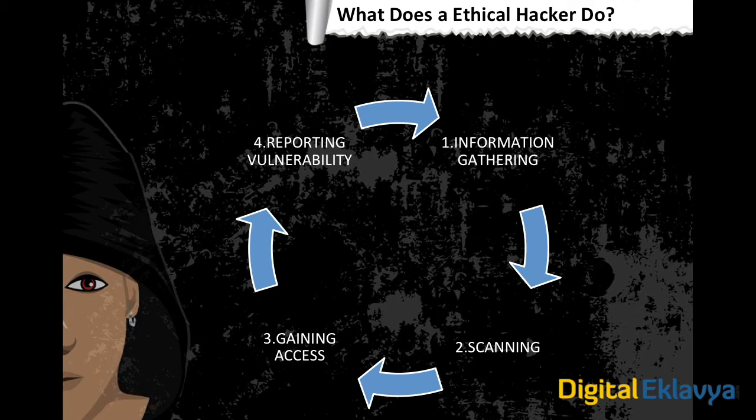We then scan that filtered information in the scanning phase, where we also find vulnerabilities. Suppose we find a vulnerability — we move to the third step: gaining access. We start building an exploit or try to exploit that vulnerability using publicly available exploits.